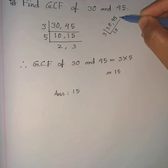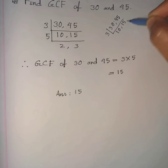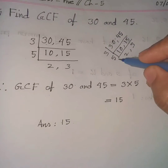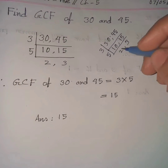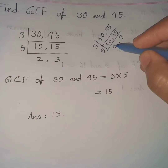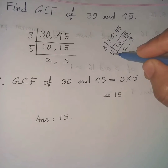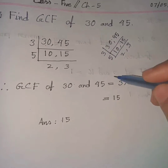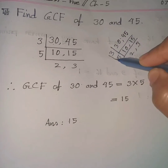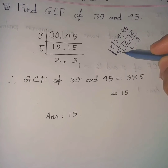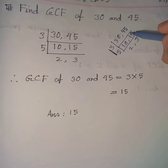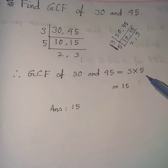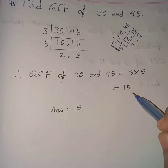Dividing 45 by 3 we get 15. Again we divide by 5, because 5 is a common prime factor of 30 and 45. Dividing 10 by 5 we get 2, and dividing 15 by 5 we get 3. Now to find GCF we multiply 3 and 5, because 3 and 5 are common to both 30 and 45. Therefore GCF of 30 and 45 = 3 × 5 = 15.